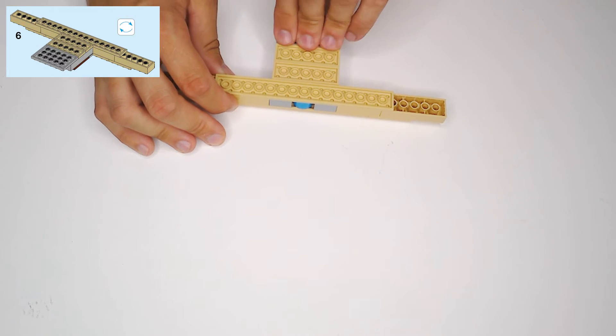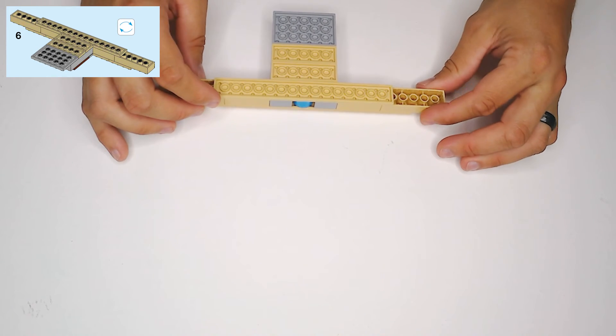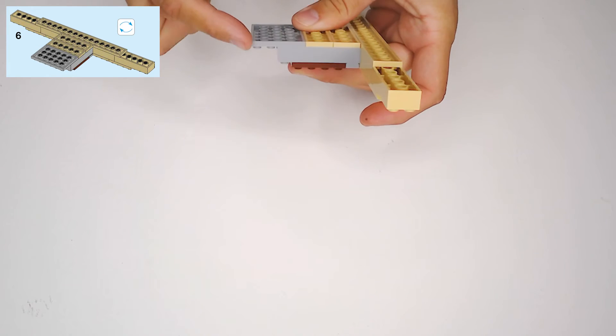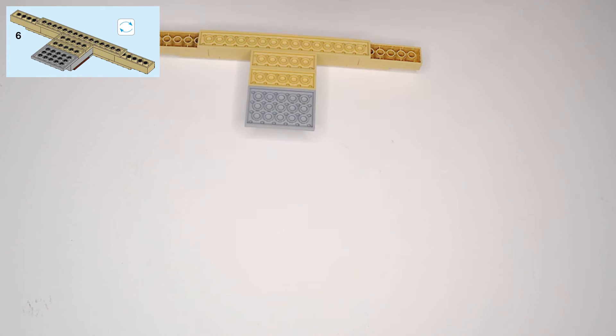And then the light gray plate is going to go over here. It's going to be half connected on the underneath side, so let me have it flipped over, it's going to be hanging over halfway. It's going to look like that for you guys.